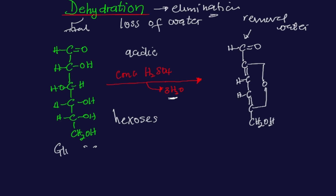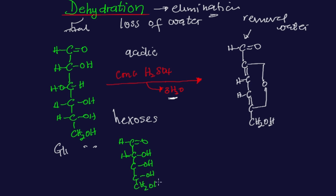Let's say we have ribose sugar, because ribose is a type of pentose. For this ribose sugar: hydrogen here, carbon here, hydroxyl group here, hydrogen here, then OH here, then CH₂OH here — so this is a five-carbon sugar. I'm going to add hydrogen to complete the structure.